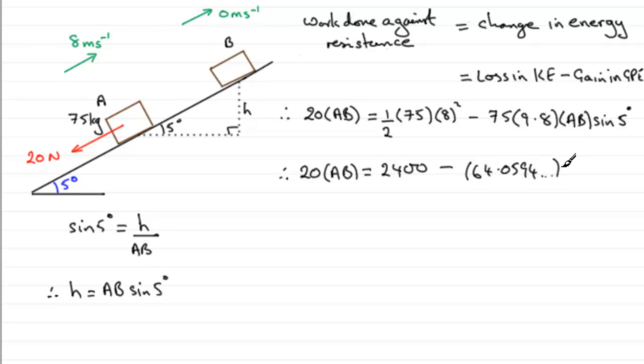And that's multiplied by AB. So we've got two terms then in AB, so we can add this term to both sides. 20 plus this 64.0594 is going to give us 84.0594 and so on. And that's multiplied by the distance AB.